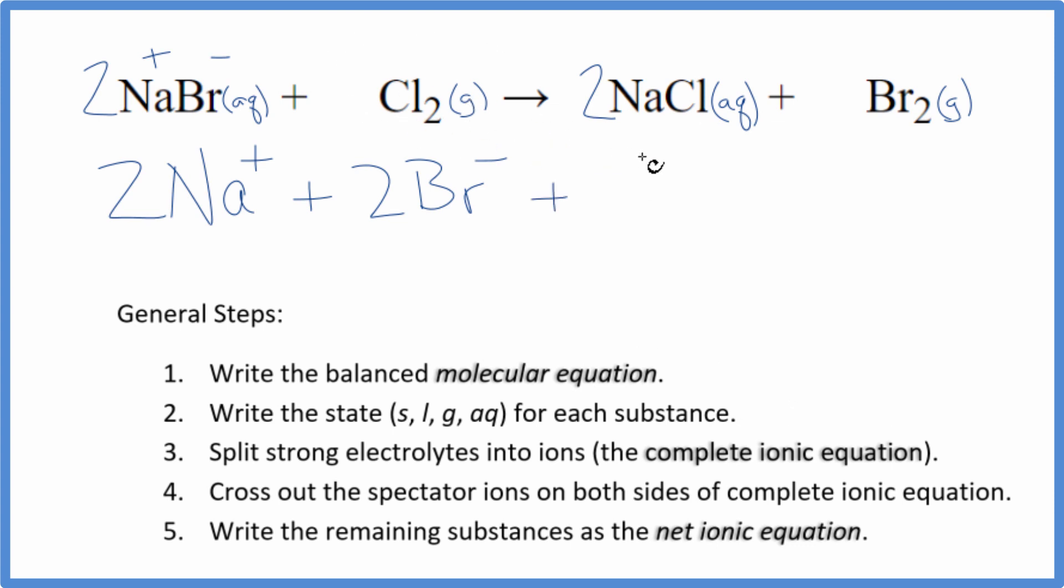Then in net ionic equations, we don't split gases apart. That's just going to be Cl2. Those are the reactants. For the products, we have two sodium ions plus two chloride ions, Cl minus, plus we have Br2, which is a gas, so we don't split that apart.